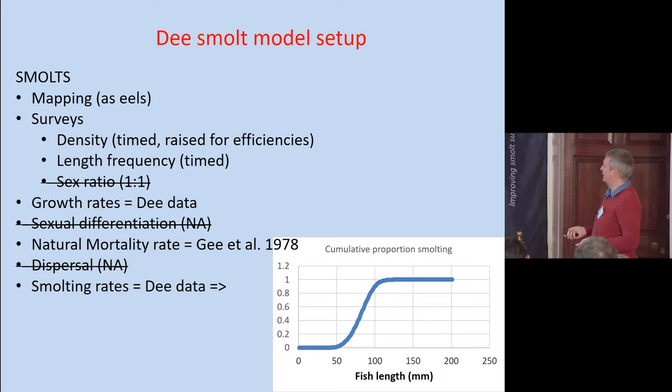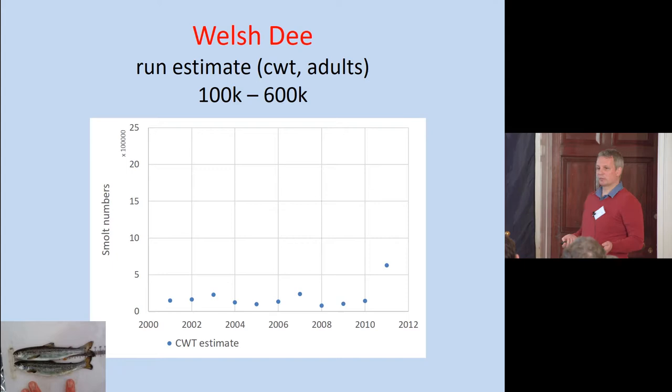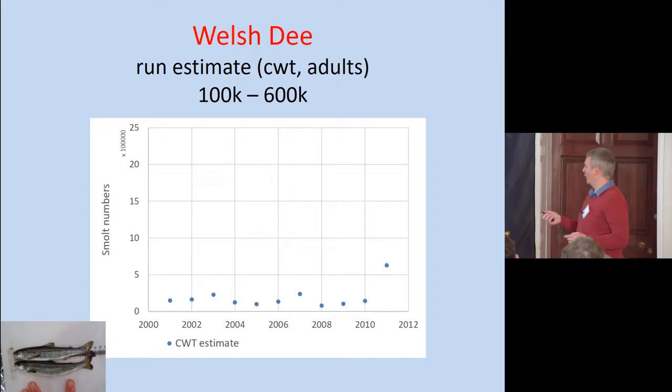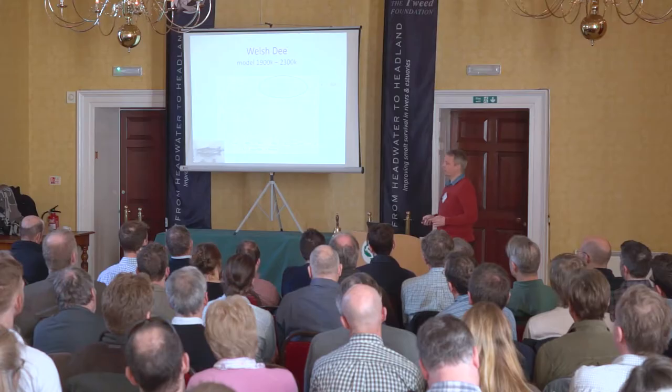So here we have the data that the Dee uses for their run estimates. They vary around about 80,000 to 200,000 smolts per annum. This one here was about 600,000 smolts in one year, and I got excited about this until Ian pointed out that it's actually based on a single recapture — so although it looks there as one point, the error bars are probably something like this. So this is the kind of average. So we applied the model to this, and these are the results we got.